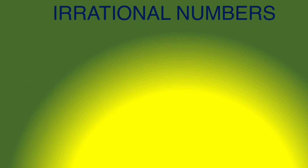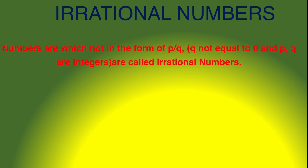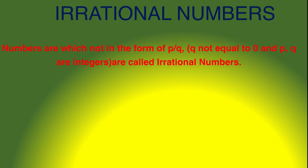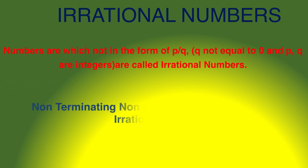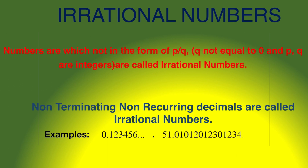Fifth one: irrational numbers. Numbers not in the form of p/q, where q ≠ 0 and p, q are integers, are called irrational numbers. For example: √3, √5, √7, 2√3, √3 + √5, √3 − 5, √8, etc. Another definition: non-terminating, non-recurring decimals are called irrational numbers. For example: 0.12345..., 51.010123..., 01234..., etc.